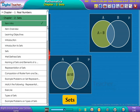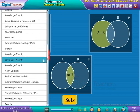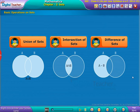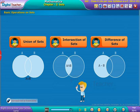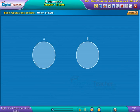Welcome to the chapter on sets: basic operations on sets. The basic operations on sets are classified into three types: union of sets, intersection of sets, and difference of sets.